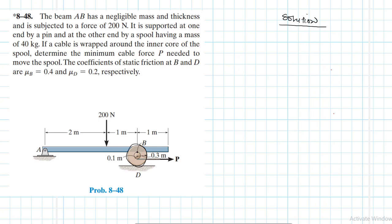So we have a spool with an inner core, and around this inner core a cable is wrapped. We have been asked to find the minimum cable force P needed to move the spool. Before we start solving the problem, let's analyze what is really happening here. What happens when we apply a force P? Because the wrapping around the inner core is like this. What do you think happens when we pull or apply a force P along this cable?